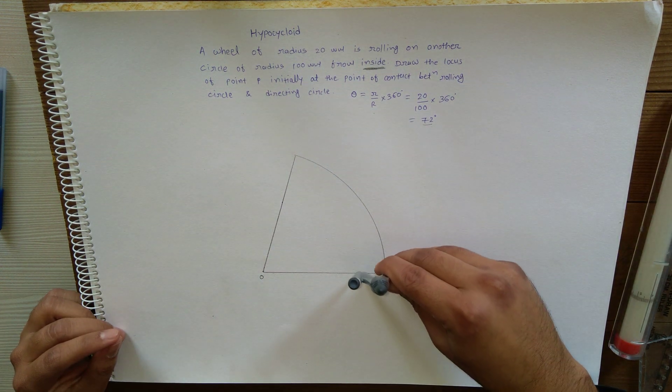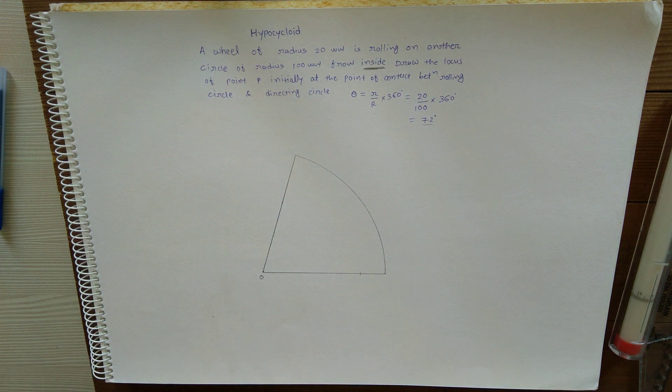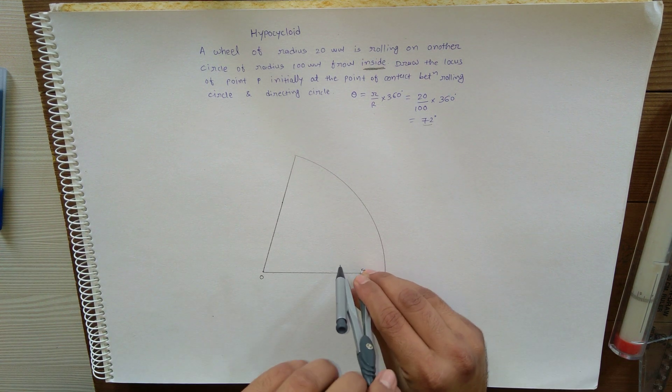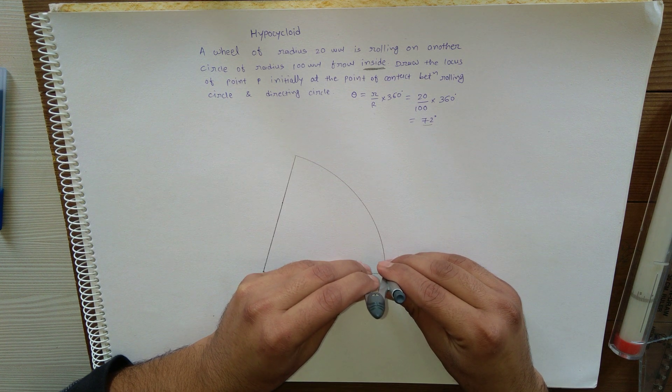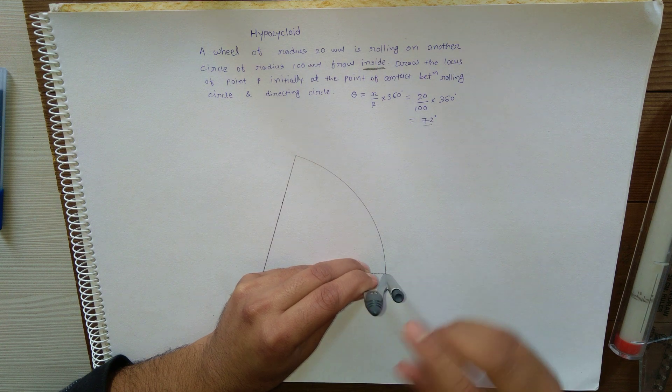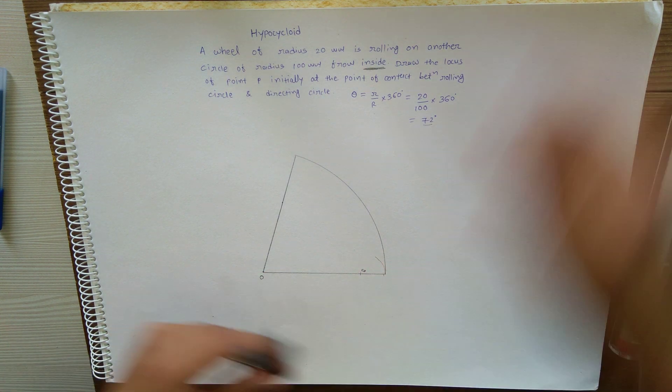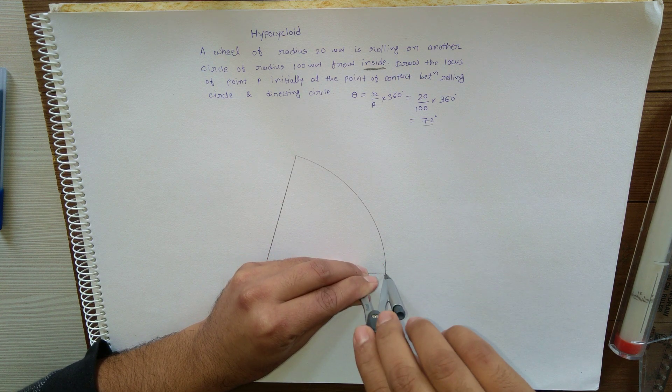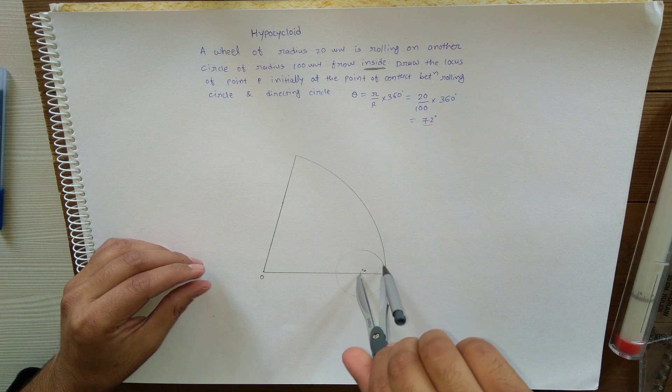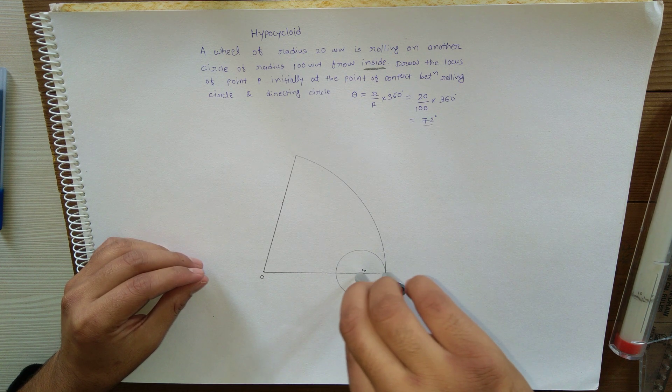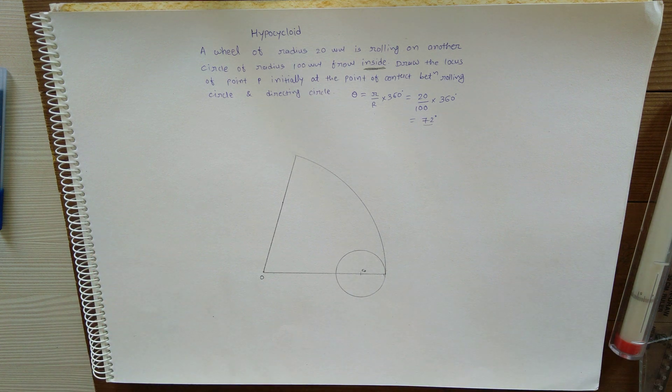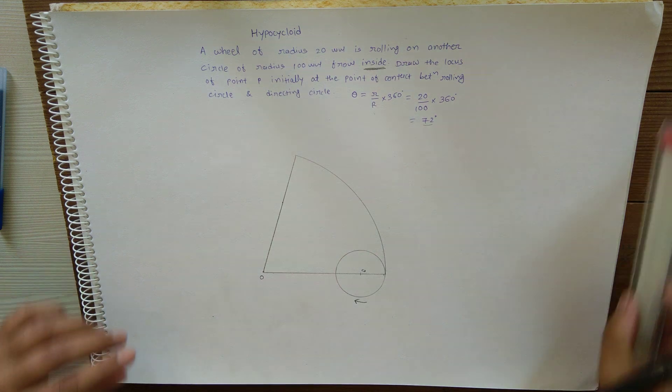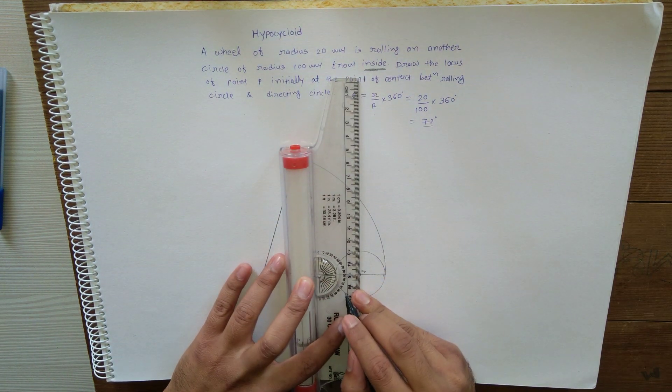At the distance of 20 mm from this arc, mark center C0, and with this center and radius equal to 20 mm, draw the rolling circle. This rolling circle is rolling in this direction. Now divide this rolling circle into eight equal parts.